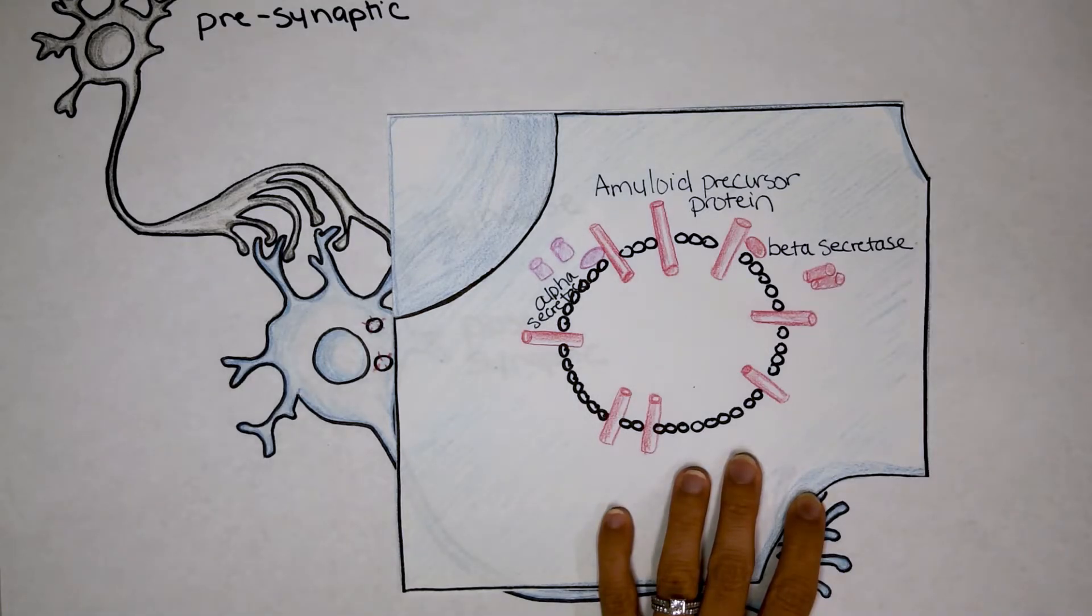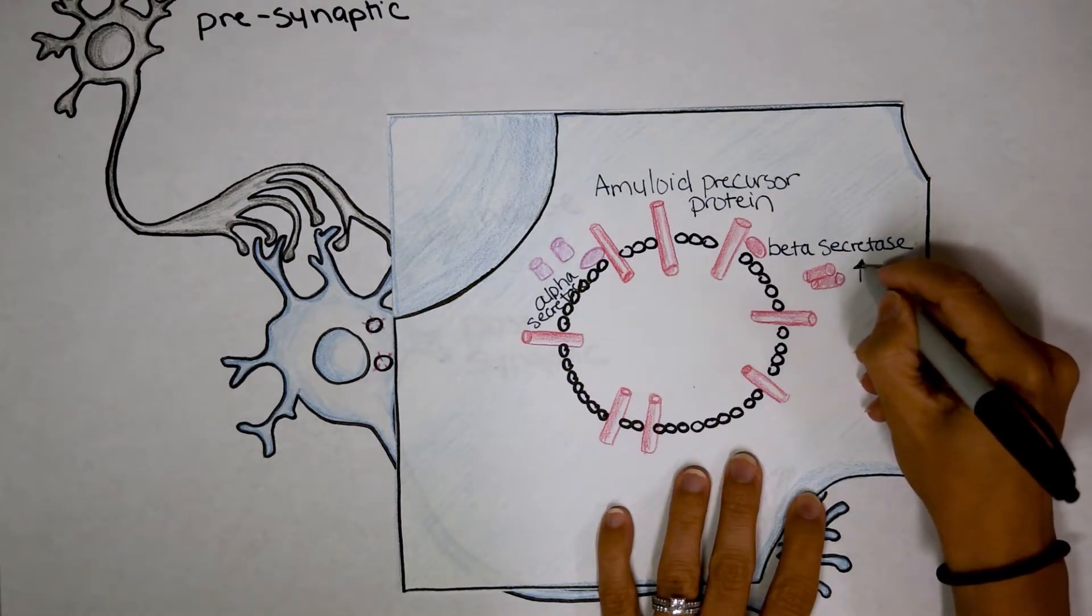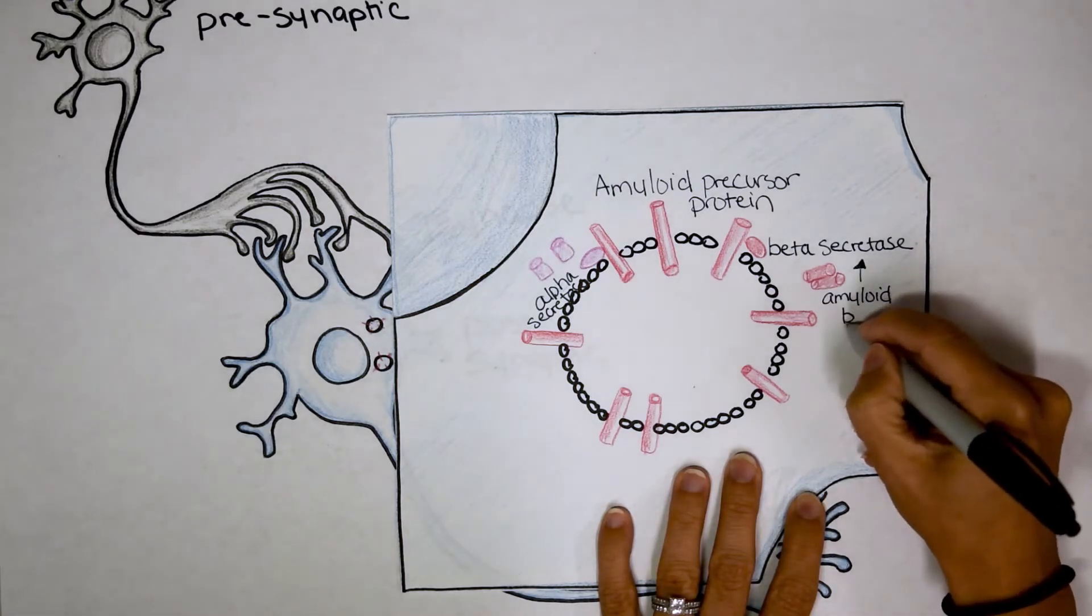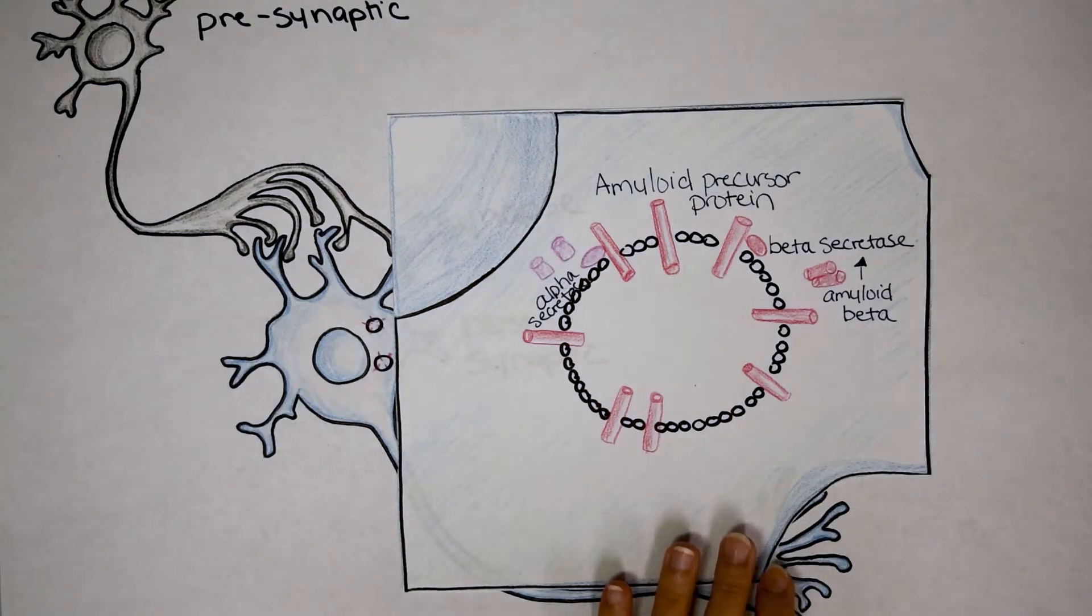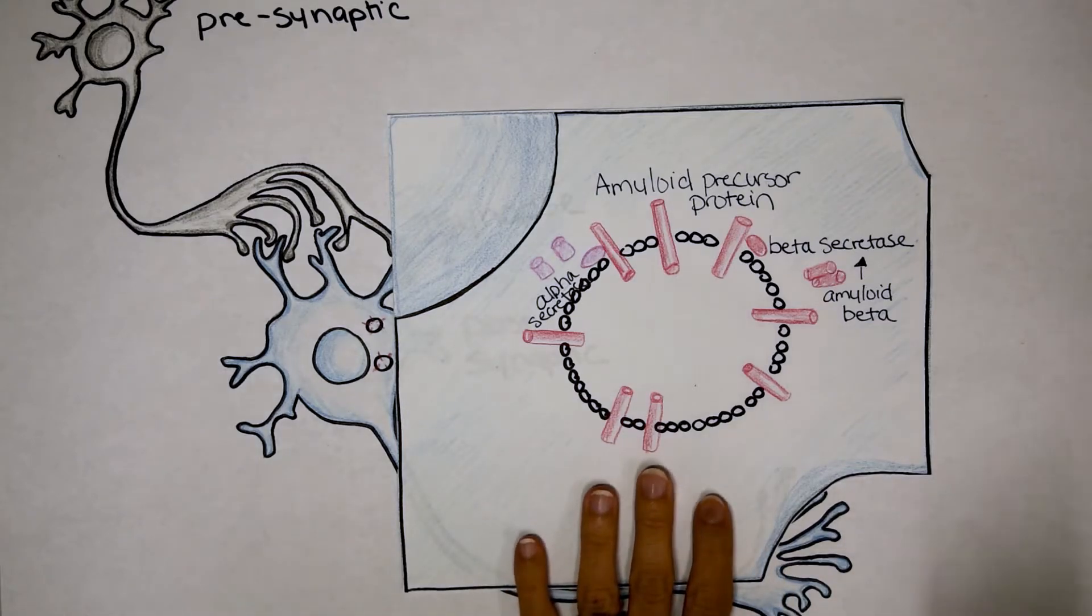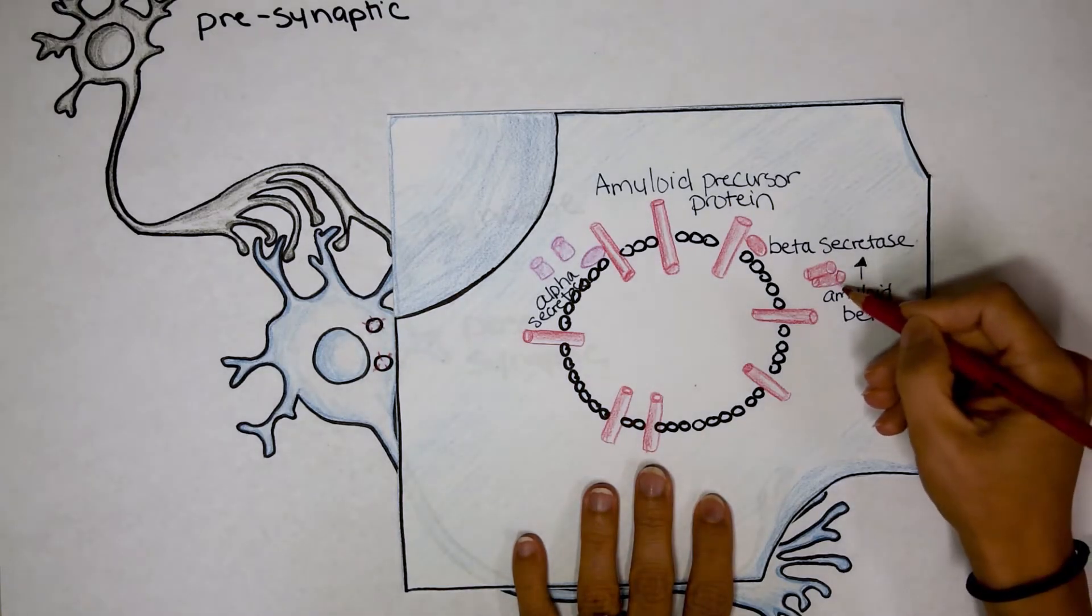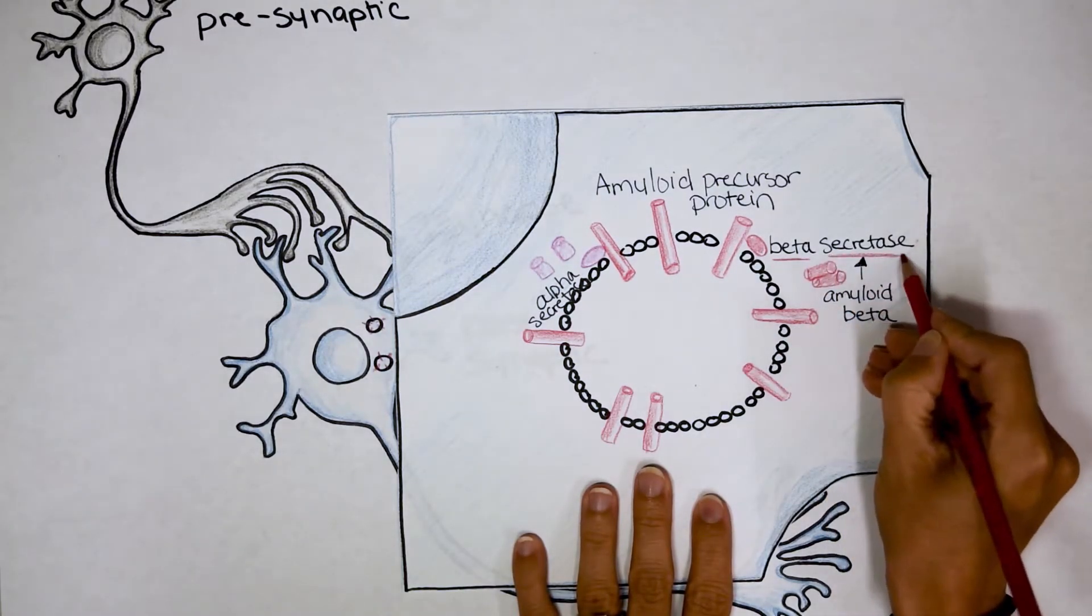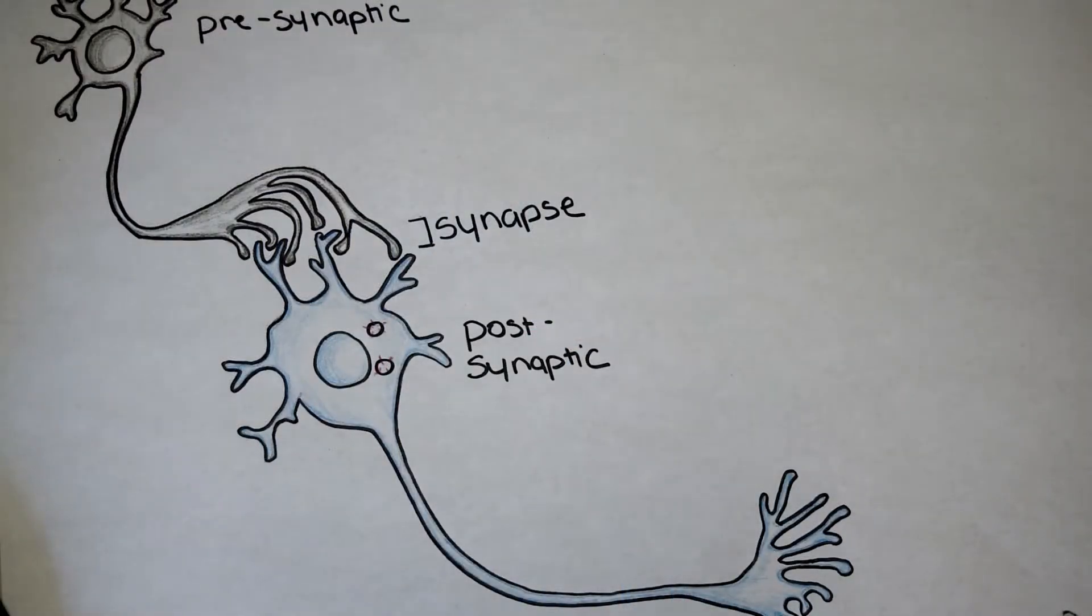So if amyloid beta here is produced at a low level, you're fine. If it's produced at a high level, it starts to clump together. And the neuron can't break it down or pull it apart. So that's why it takes 50 to 80 years for this to develop. Because typically, this process is normal and helpful. There are different types of mutations that cause people to create more or even have a more active beta secretase. So there are genetic reasons why some people in certain families can get Alzheimer's disease at an earlier age. Okay, now it's time for the rest of the story.